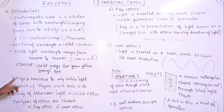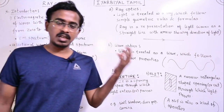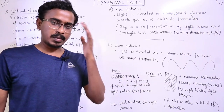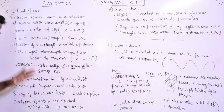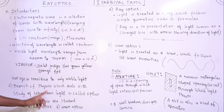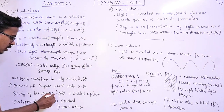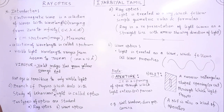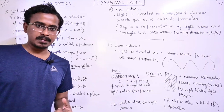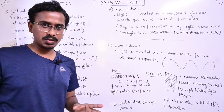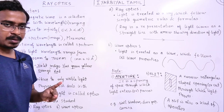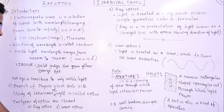Our eye is sensitive only to visible light. Optics is a branch of physics which deals with the study of the behavior of light — specifically visible light. There are two ways to study optics: one is Ray Optics and the other is Wave Optics.